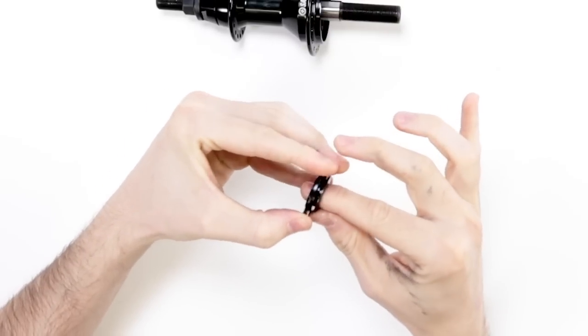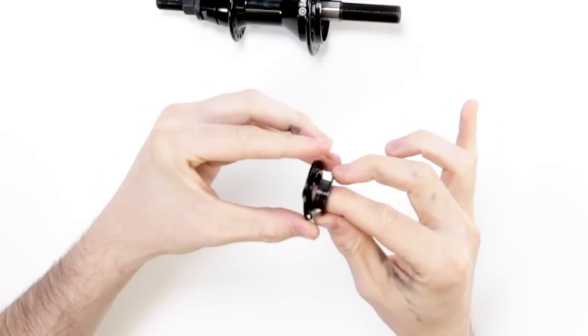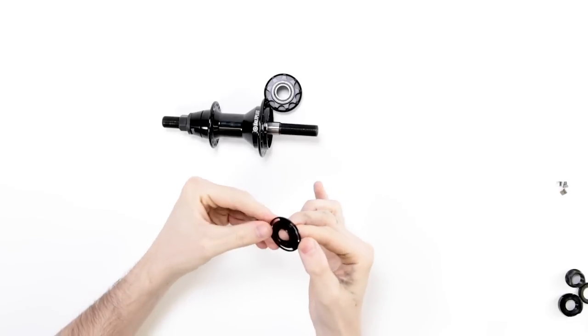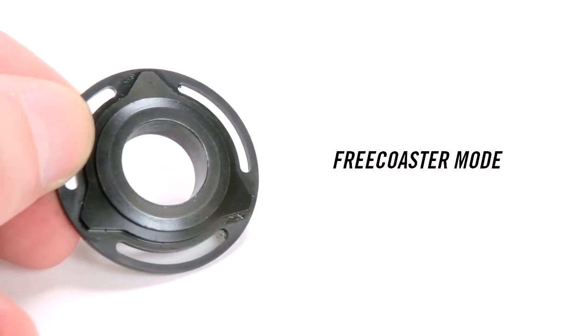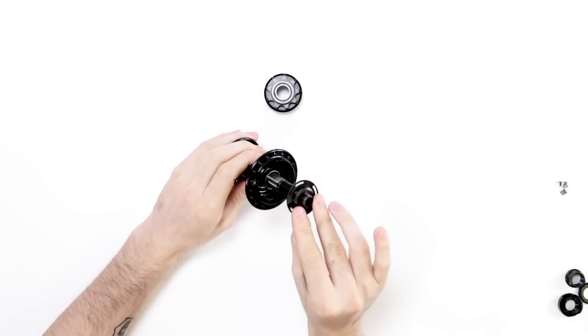You're going to want to take the clutch disc and slide it off the spacer, rotate it 180 degrees so the ramps are now facing the back of the hub. You're then going to want to take the clutch disc and put it back inside the hub.